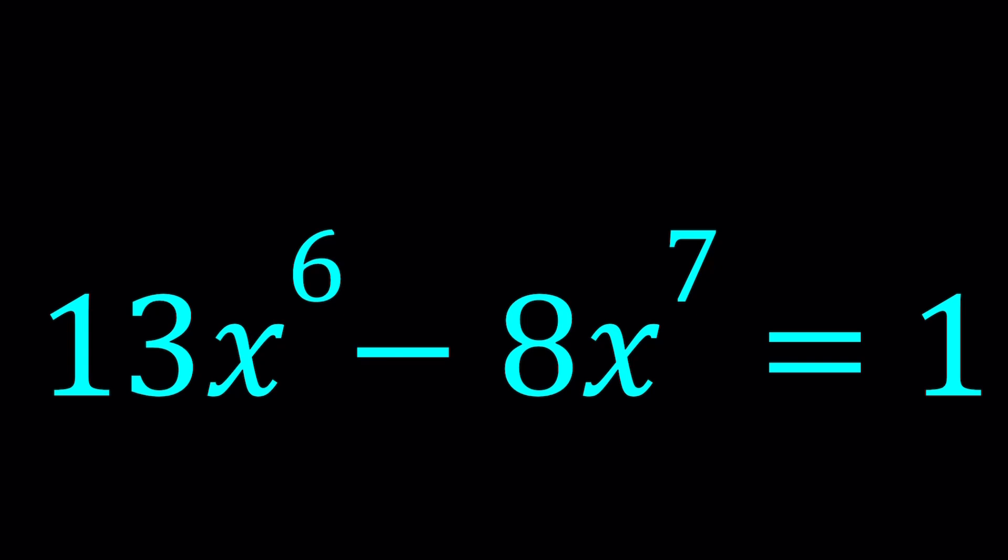And I just wanted to do a similar problem, hopefully this time, correctly. Anyways, we have 13 times x to the 6th power minus 8 times x to the 7th power equals 1. And we're going to be solving for x.